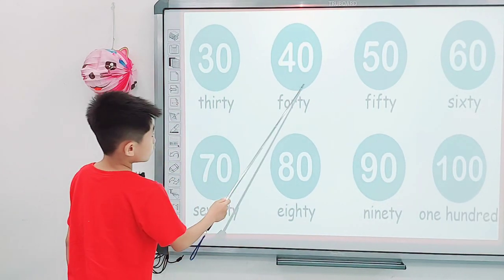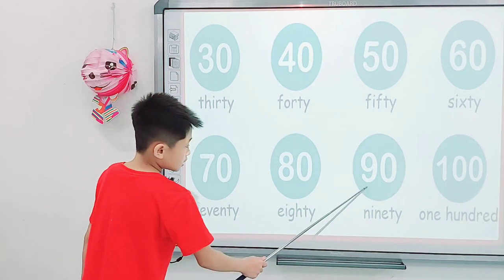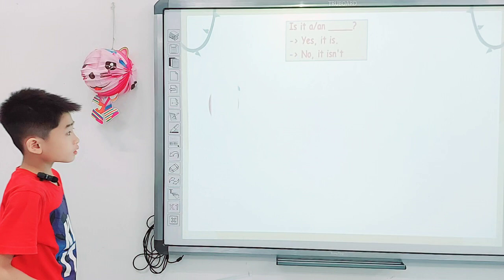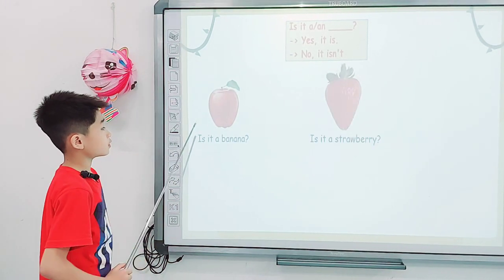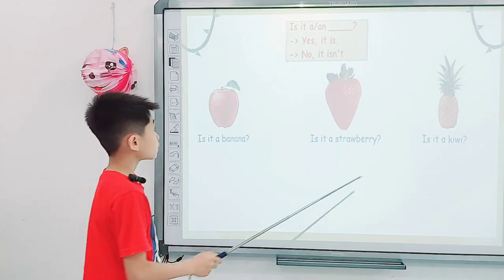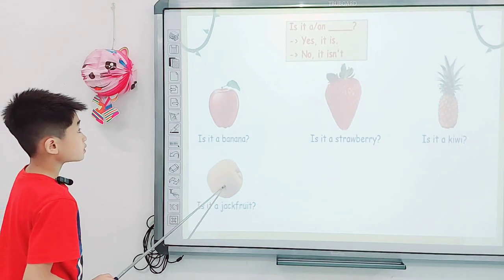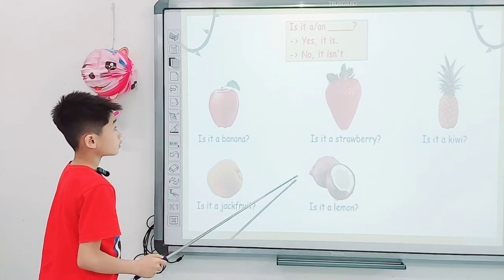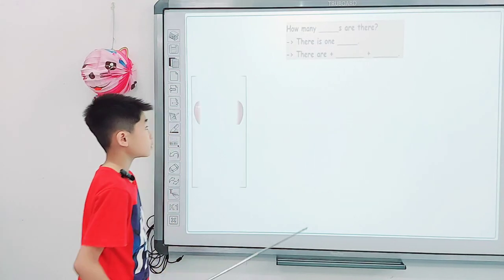Next one, look at screen. Tell me, is it a banana? No, it isn't. Is it a strawberry? Yes, it is. And is it a kiwi? No, it isn't. And is it a jackfruit? Yes, it is. Is it a lemon? No, it isn't. Is it a pear? Yes, it is a pear.